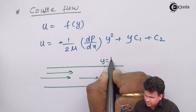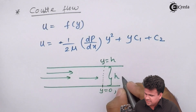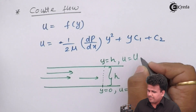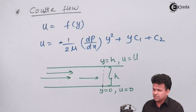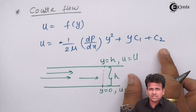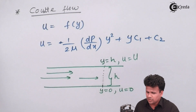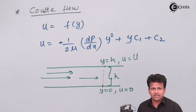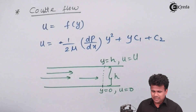At y = h, where h is the vertical height, the topmost velocity equals capital U. We have defined the boundary conditions for a simple Couette flow, and we now substitute these boundary conditions into the solution of the differential equation.